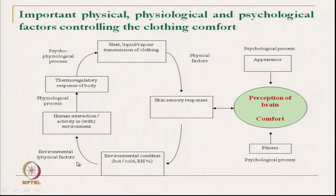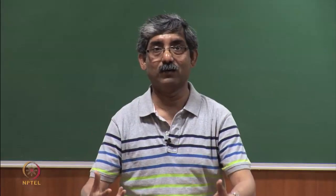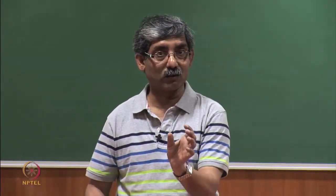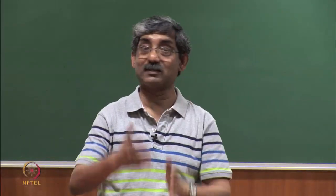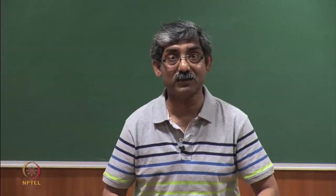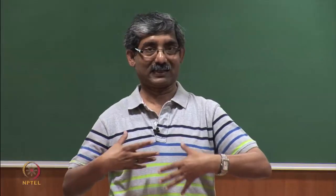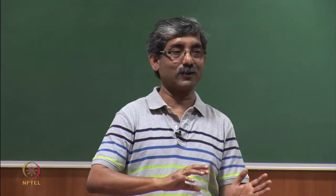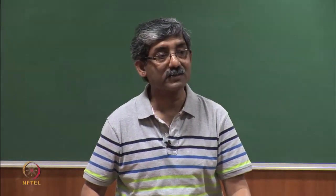Then come the physical or environmental factors like human interaction or activity level. Clothing comfort depends on the activity level — whether human activity is active or if we are sitting idle. Our clothing function is to compensate all this heat and moisture mass transmission. The thermoregulation response of the body — like we start sweating — means we may feel uncomfortable if our skin remains wet, so our clothing's function is to make it dry or to evaporate all this sweat.